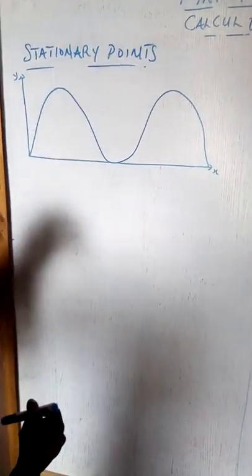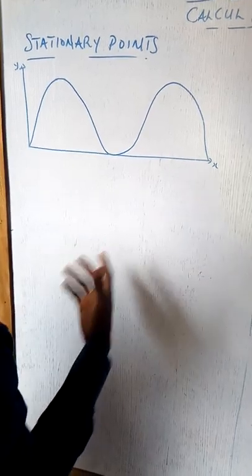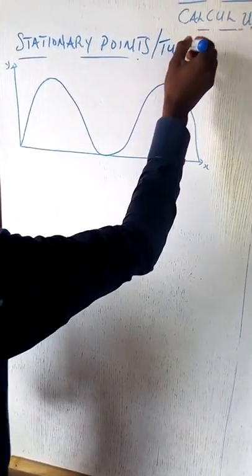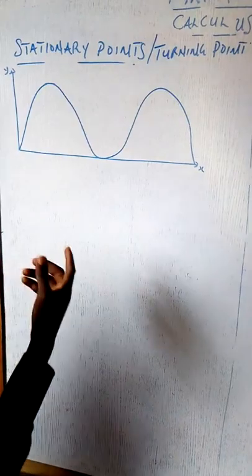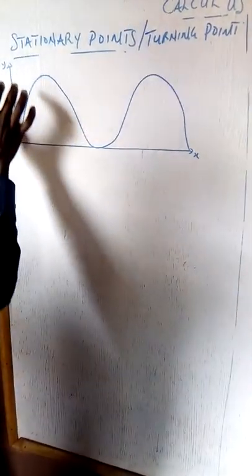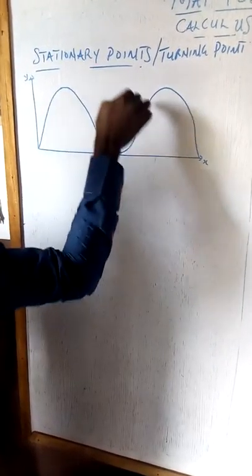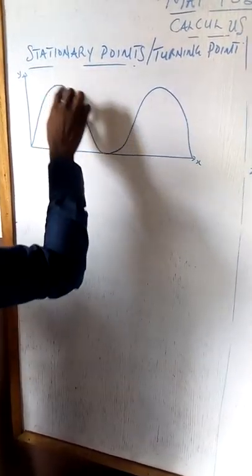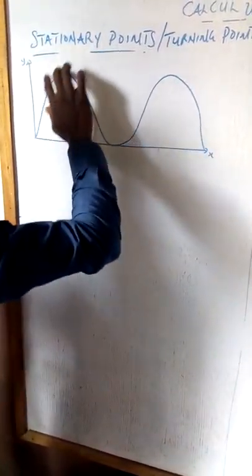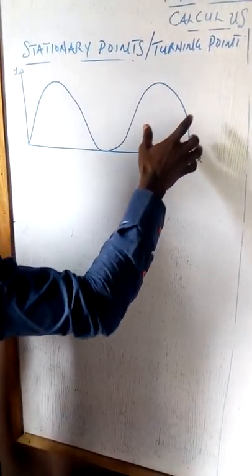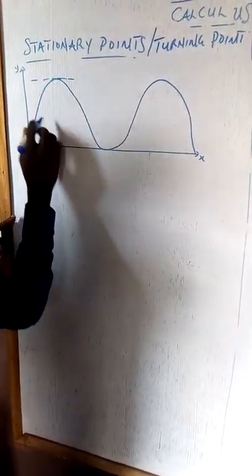Another application of differentiation is what we call the stationary point — in some cases also called the turning point. This will be illustrated with a graph on the y and x axes. Consider a curve that is sinusoidal in nature, repeating itself in a regular pattern on a Cartesian plane. Looking at this curve, we can identify the uppermost point.